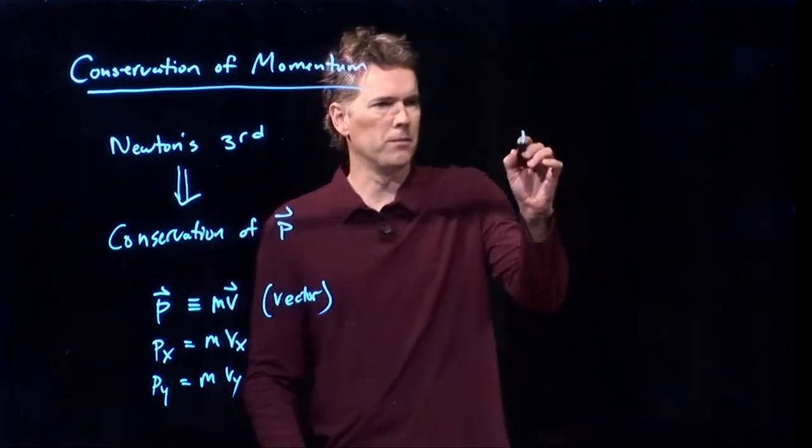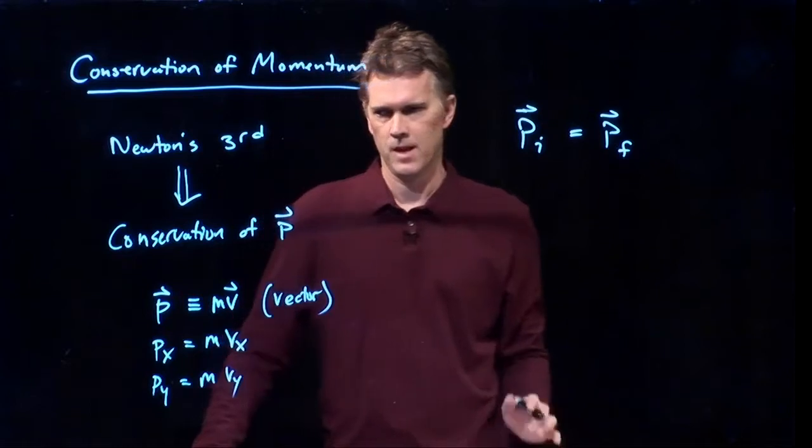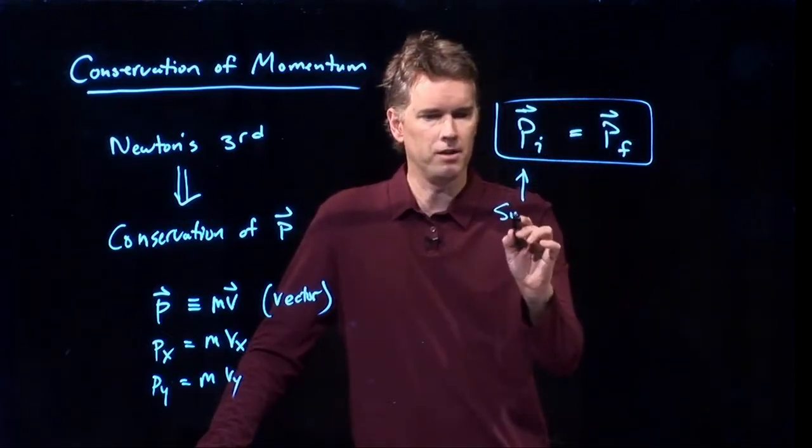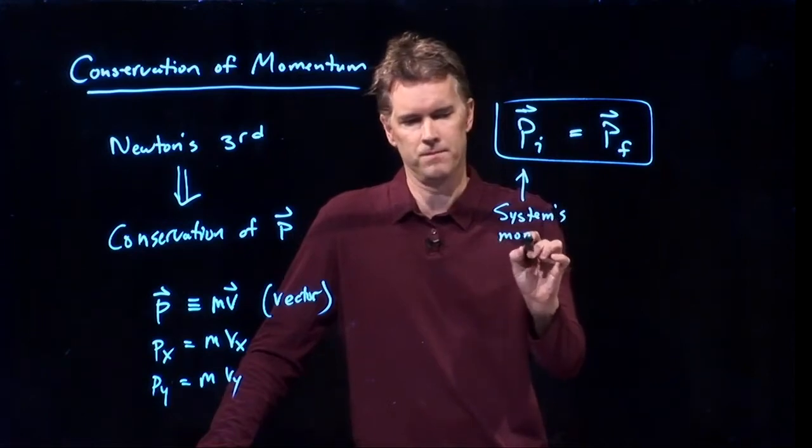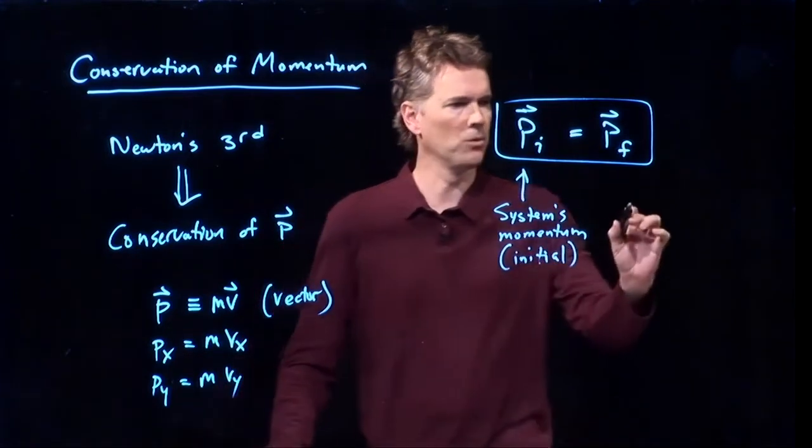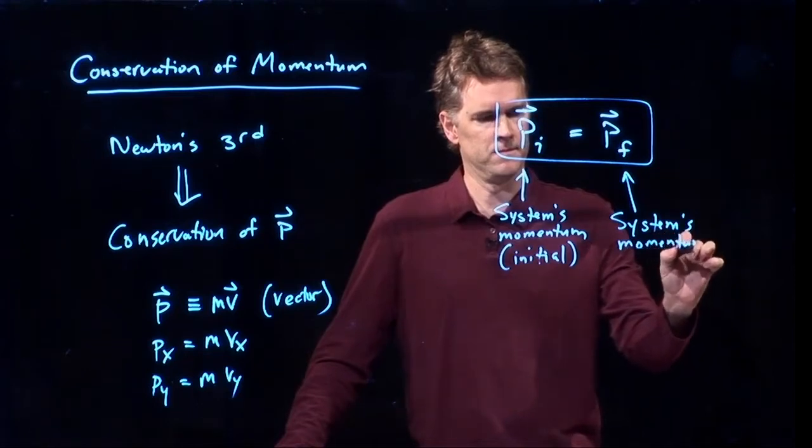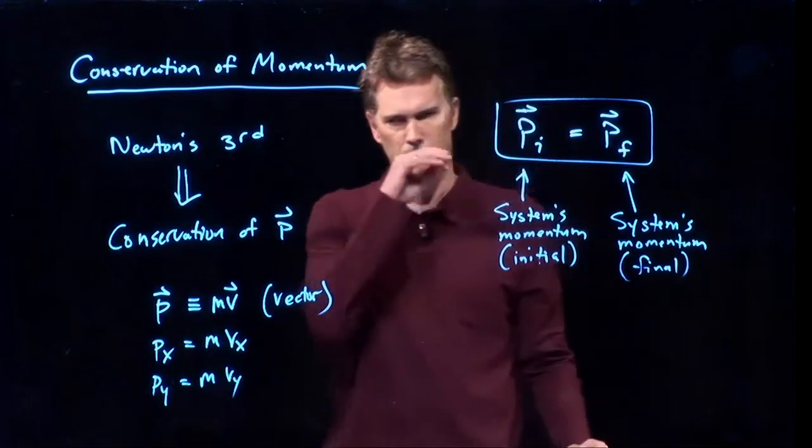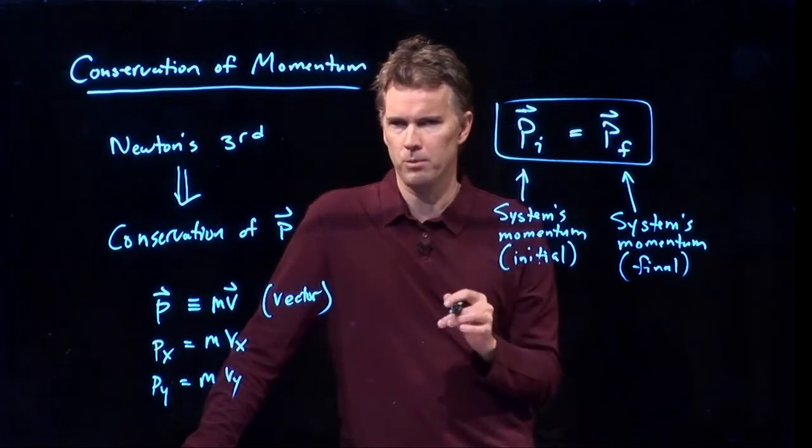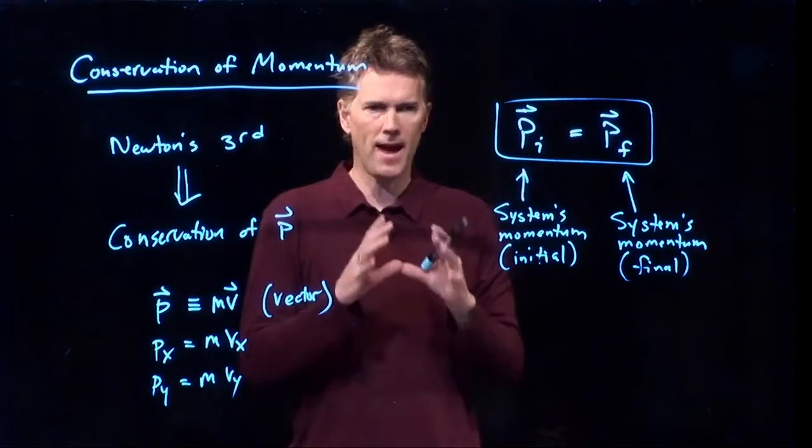So, what does conservation of momentum tell us? It tells us that P initial equals P final. And this is really important to understand everything that's in this equation. There's kind of a lot that's in this equation. This is the system's momentum initially. And that is equal to the system's momentum finally. You have to be able to identify the system. So, in the example that we just talked about with a rocket exploding into three pieces, you can put a dashed line around that rocket and that will define the system.